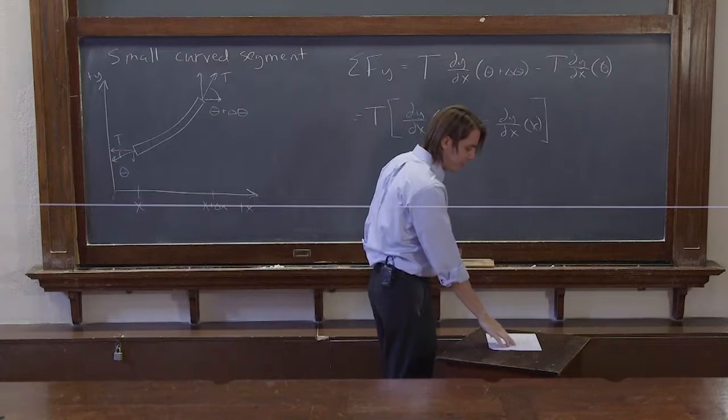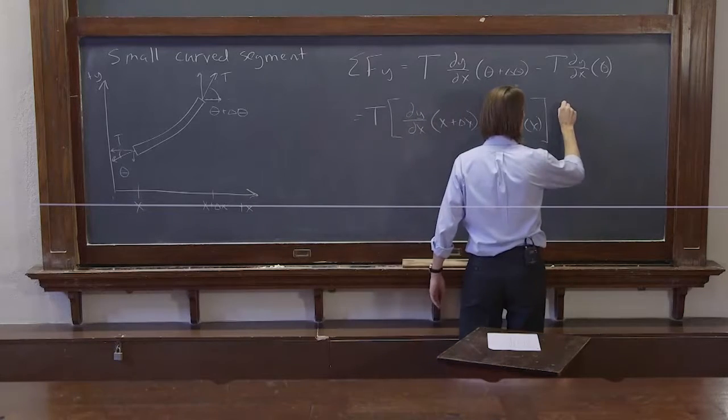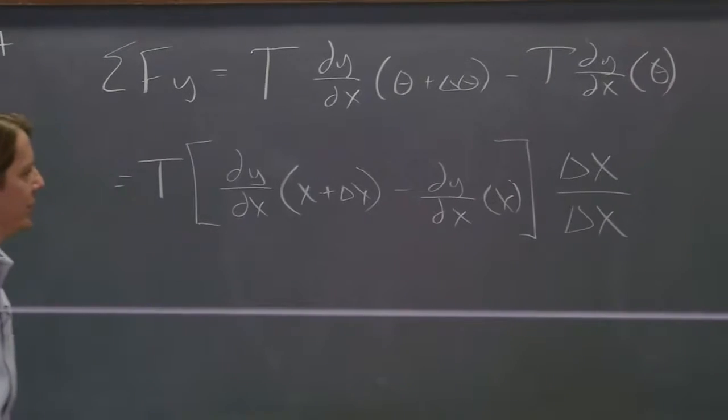It's not my wisdom. It's wisdom I learned, which I guess that's what wisdom is. So the wisdom here is to multiply by 1. And of all the many 1's you can multiply, multiply by delta x over delta x.